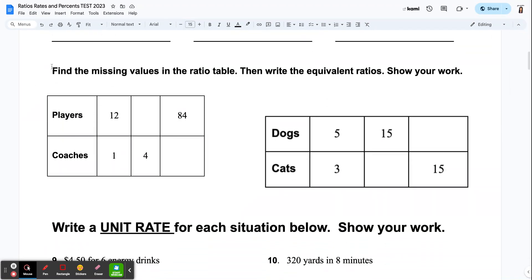For the next section, find the missing values in the ratio table. Then write the equivalent ratios. Show your work. So basically, this is just equivalent ratio tables. You're filling in your blanks. A helpful hint is to be able to not only look for patterns horizontally, but also vertically. And that's all I'm saying.